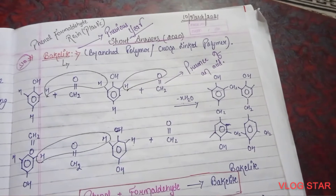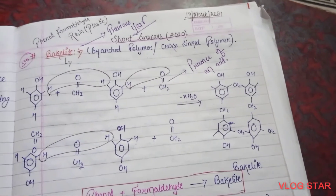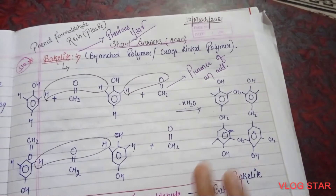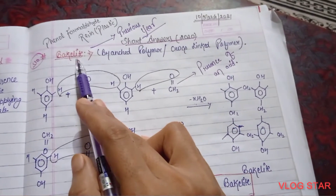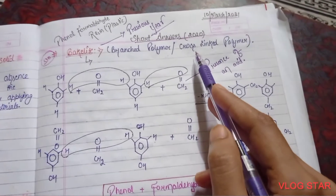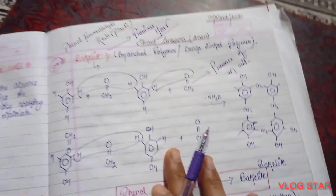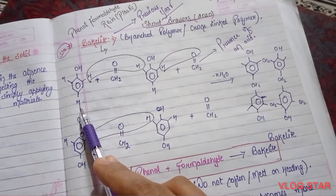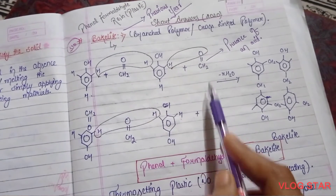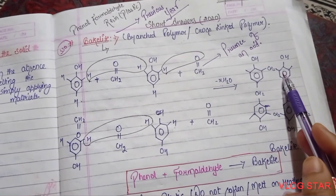Welcome to Chemistry Button. In this video we are going to learn about Bakelite — this question was also asked in previous year exams. Bakelite is basically called a branched polymer; it is also known as a cross-linked polymer. Bakelite ka formation phenol molecule aur formaldehyde molecule ke polymerization se hota hai in the presence of an acid.